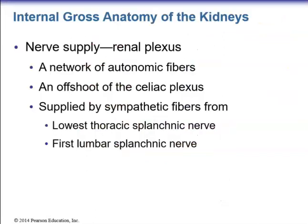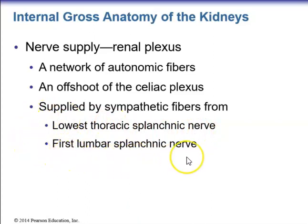The nerve supply of the kidneys is the renal plexus — a network of autonomic fibers. It is an offshoot of the celiac plexus, supplied by sympathetic fibers from the lowest thoracic splanchnic nerve as well as the first lumbar splanchnic nerve.